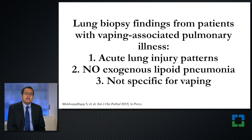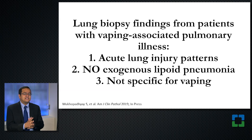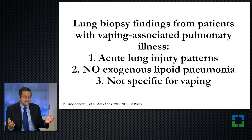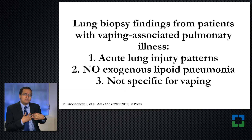To summarize, the lung biopsy findings from patients with vaping-associated pulmonary illness are: first, we are seeing acute lung injury patterns; second, there is no evidence of exogenous lipoid pneumonia; and third, the findings are not specific for vaping — a pathologist looking at this biopsy without knowing the patient vaped cannot tell it's vaping-related. Any other chemical injury and many other conditions can look similar, including drug-induced lung injury, such as amiodarone, which is given for heart rhythm abnormalities and causes very similar pathologic findings.